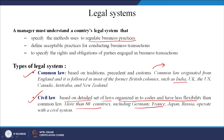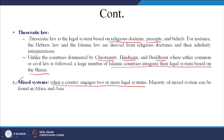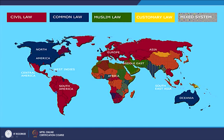The third type is theocratic law, where the legal system is based on religious doctrine, precepts and beliefs. For instance, Hebrew law and Islamic law are derived from religious doctrines and their scholarly interpretations. Unlike countries dominated by Christianity, Hinduism and Buddhism where either common or civil law is followed, a large number of Islamic countries integrate a legal system based on the Sharia. Mixed systems occur when a country engages two or more of these legal systems — as seen in many African and Asian countries, including India.